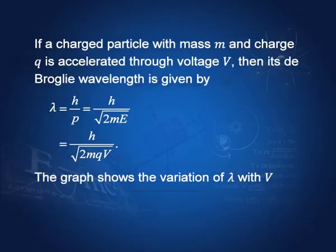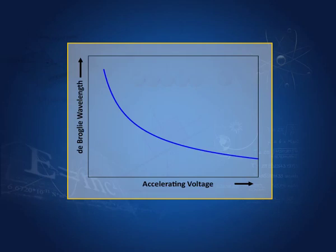We have shown that lambda = h/p = h by square root of 2mE. If E is due to a charged particle moving through potential difference V, then lambda = h by square root of 2mqV. So lambda is inversely proportional to the square root of V. Plotting the de Broglie wavelength against the accelerating voltage gives this relationship.